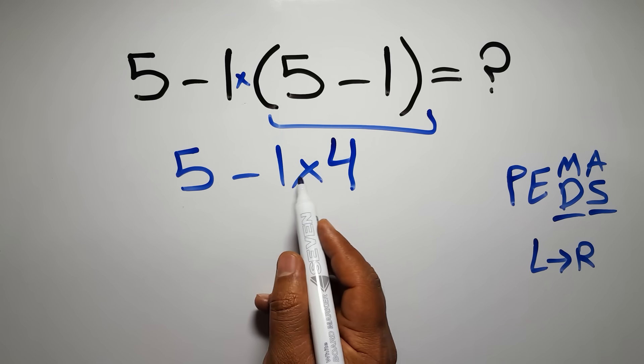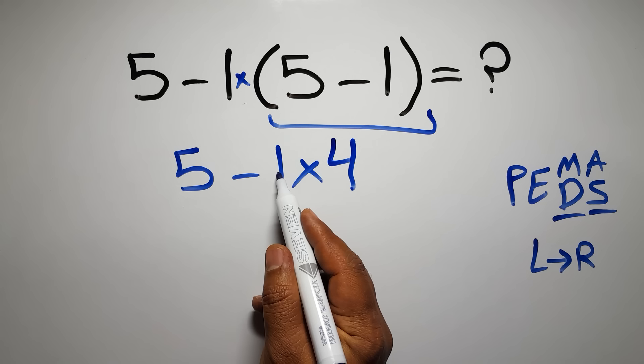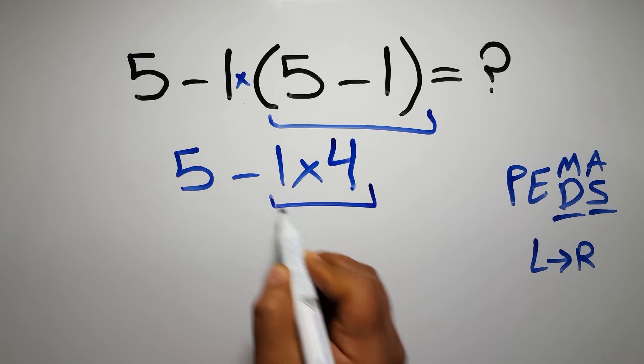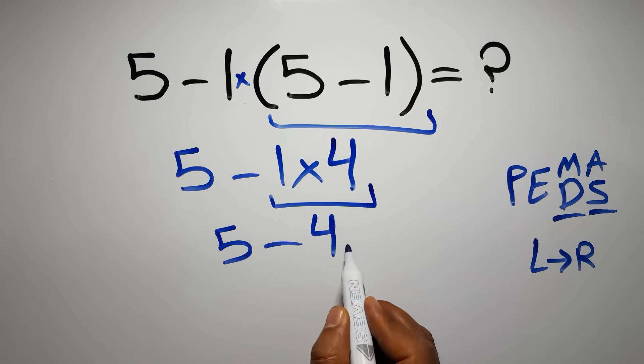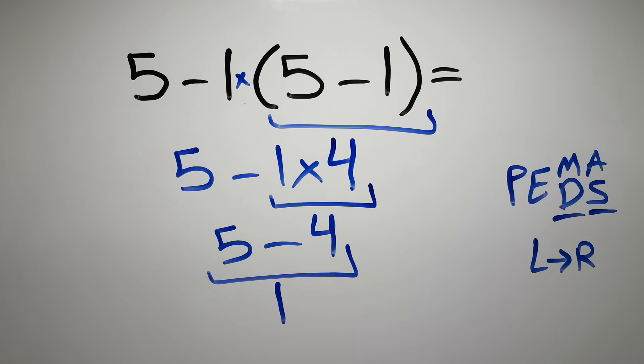So here first we have to do this multiplication. 1 times 4 gives us 4. So 5 minus 4, which equals 1. And this is our final answer to this problem. The correct answer is 1.